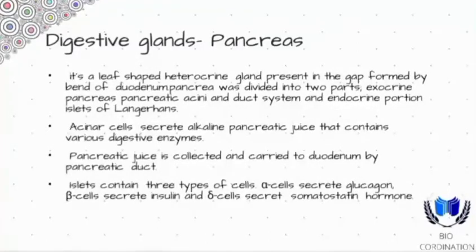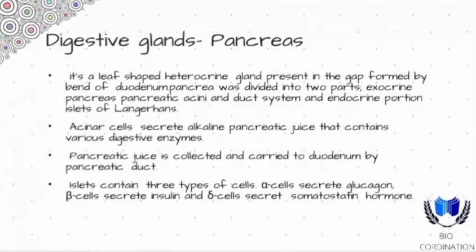What is different about delta cells is that they secrete somatostatin, which prevents the production of other hormones and also stops unnatural reproduction of cells. Somatostatin stops the rapid reproduction of cancer cells — which are unnatural — because if they reproduce rapidly, they can harm the body. It also stops the secretion and production of other hormones when released.